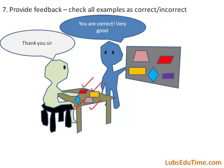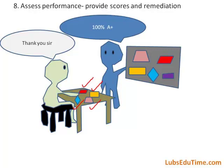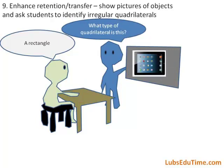Event 7: Provide feedback. Check all examples as correct or incorrect. Event 8: Assess performance. Provide scores and remediation. Event 9: Enhance retention and transfer. Show pictures of objects and ask students to identify quadrilaterals.